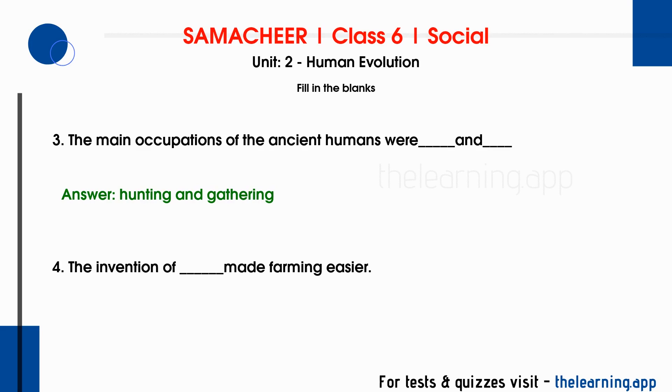The fourth question: The invention of dash made farming easier. The correct answer is plough. The plough is used for farming.